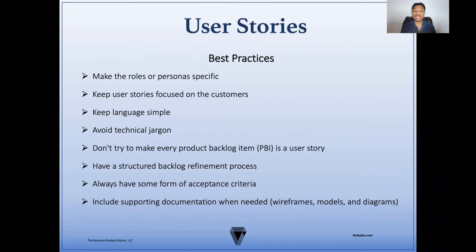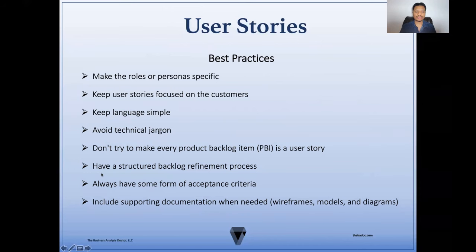Now let's talk about some user story best practices. You always want to make the roles or personas specific. Be sure to keep your user stories focused on the customer. Keep the language simple and avoid technical jargon. When dealing with the overall product backlog, don't try to make every product backlog item a user story — there are going to be other backlog items such as tasks, spikes, or epics. Another best practice is to always have a structured refinement process, typically done in preparation for your iteration planning sessions. And always have some form of acceptance criteria. The last best practice is to include supporting documentation when needed, such as wireframes, models, or diagrams.